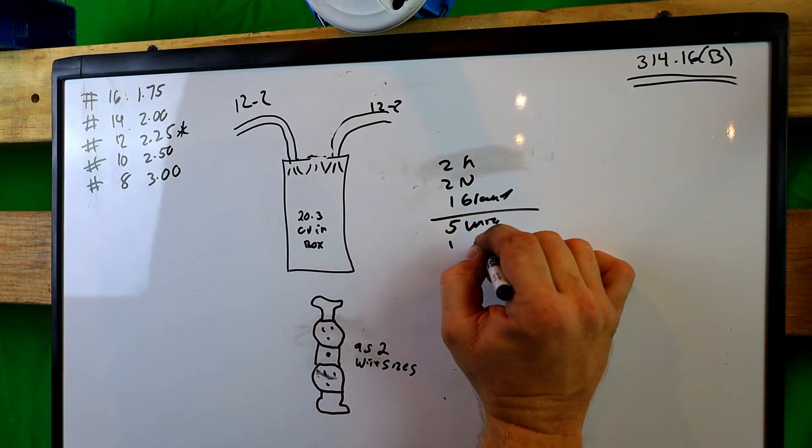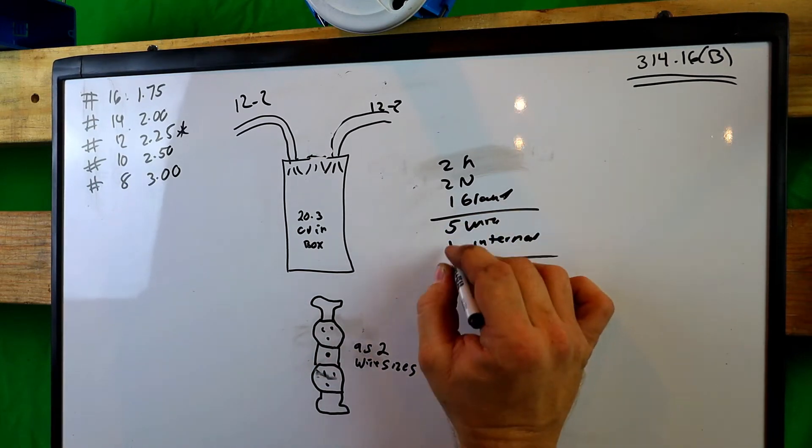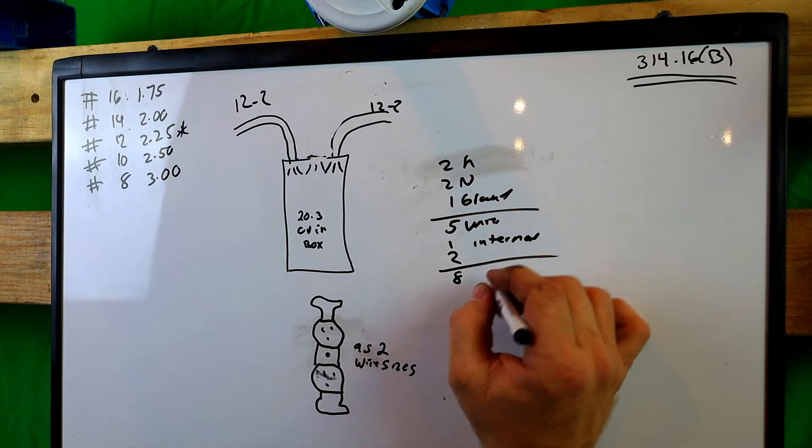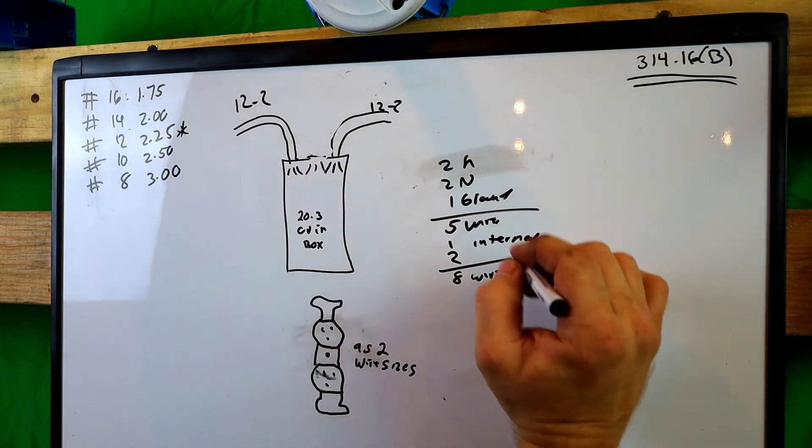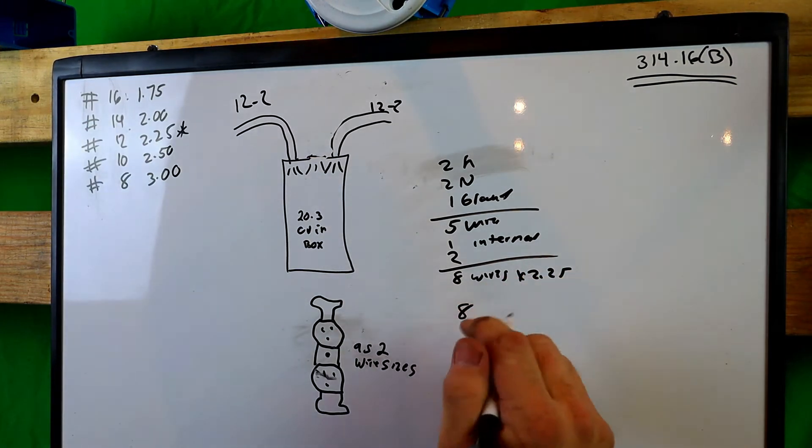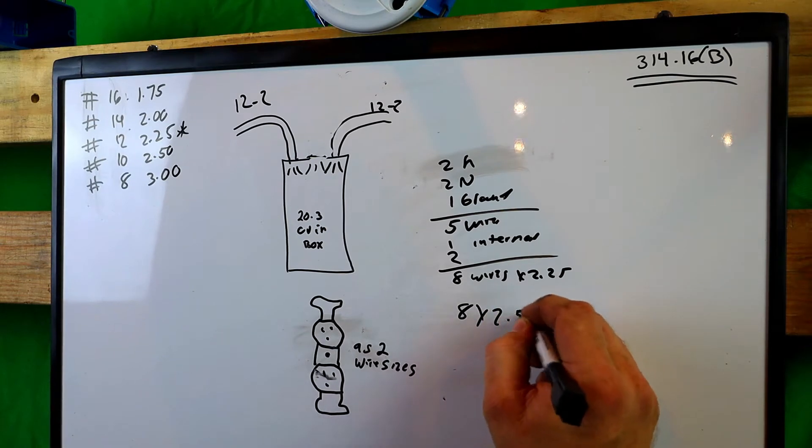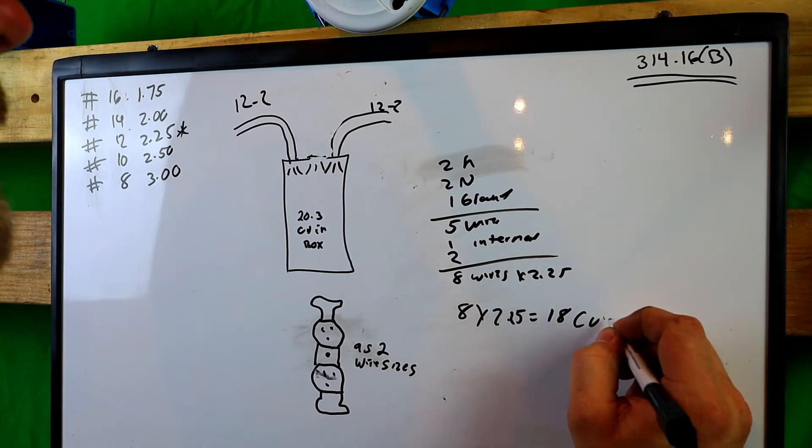All right. We have an internal and a receptacle for a total of seven, eight wires. And we have 12-2, it's at 2.25, and that equals eight times 2.25 equals 18 cubic inches.